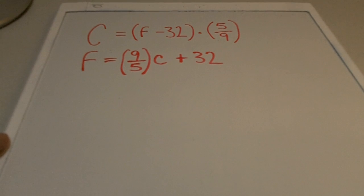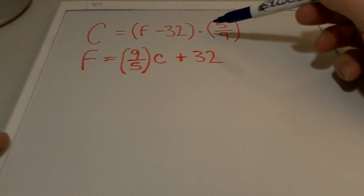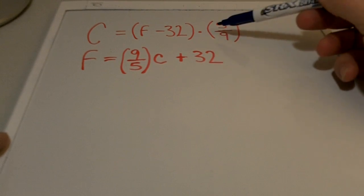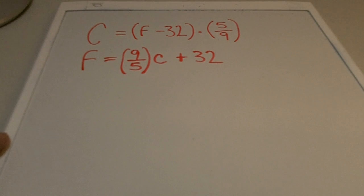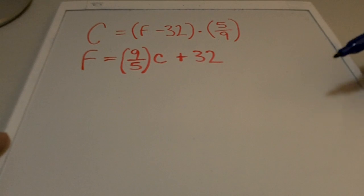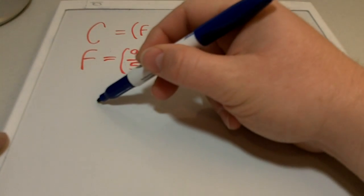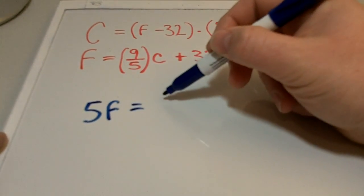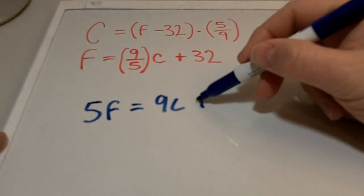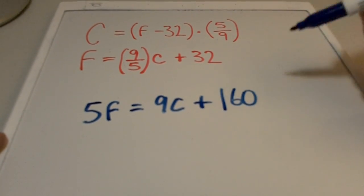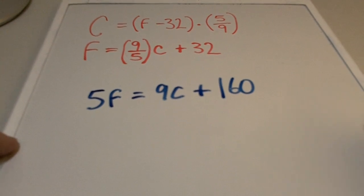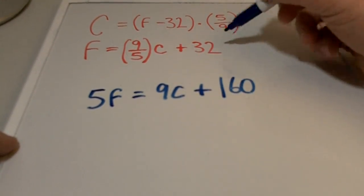Looking at these two formulas, one is just the inverse of the other. I could show you that on a graph or write it all out and show you how they're inverses of each other, but you just have to trust me on that. The shortcut is: 5F equals 9C plus 160.